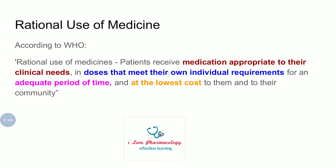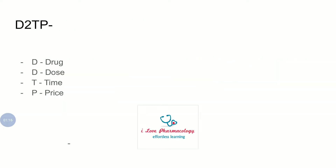You can remember this as D2TP: D stands for an appropriate drug to be selected, the second D stands for an appropriate dose, T stands for appropriate duration of time, and P stands for appropriate price.